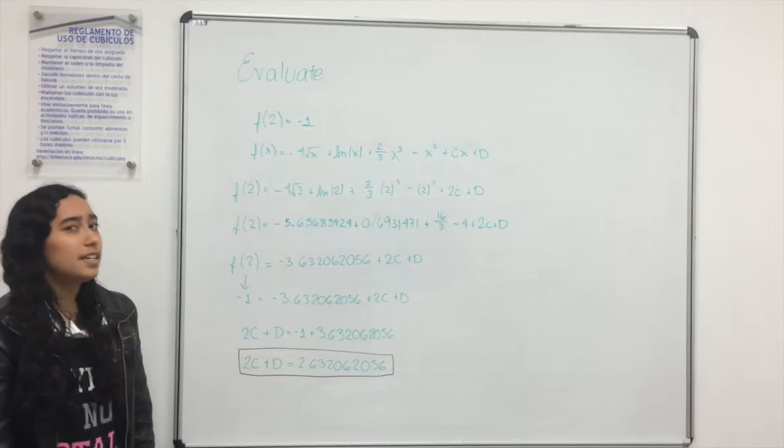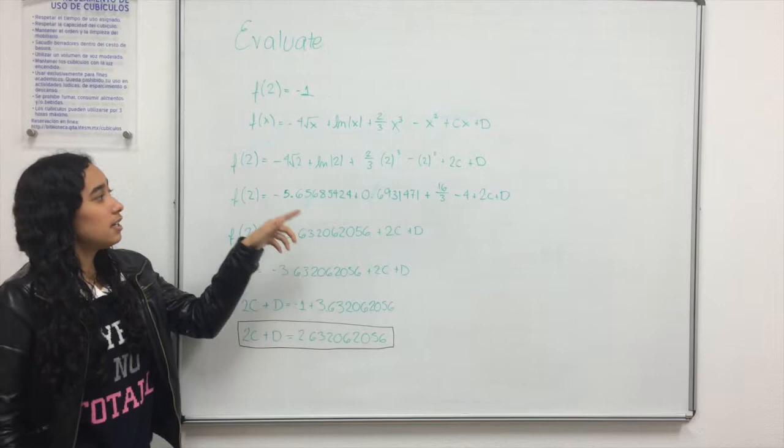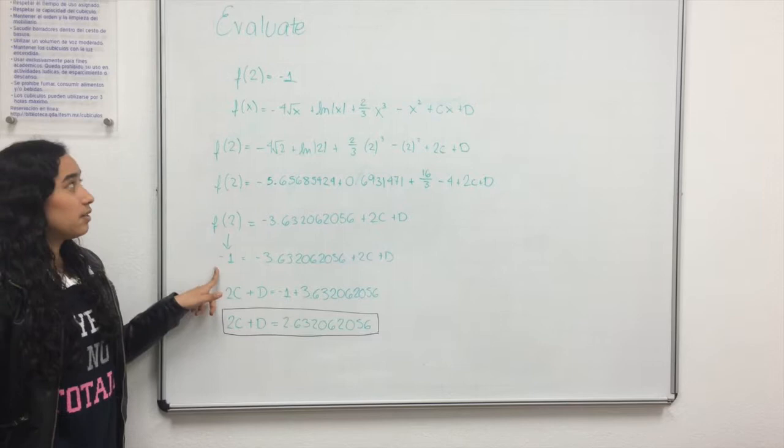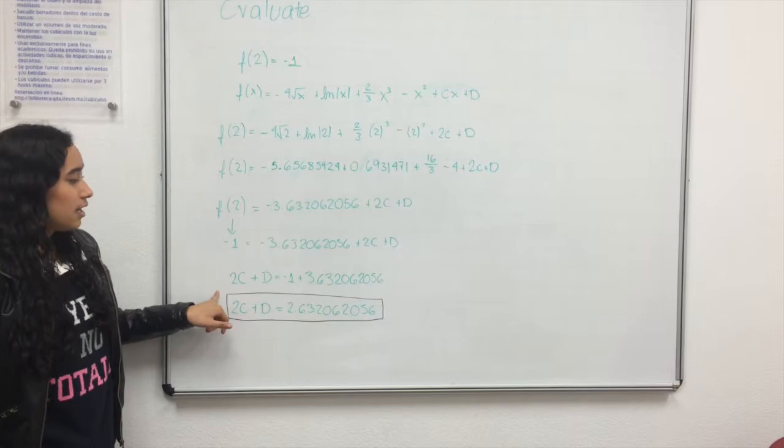So the problem says that f of 2 equals minus 1, and we now know the function of x. So we need to substitute 2 in all the x, evaluating the function. And so we make the operations needed to get a number, so that we can isolate 2c plus d. And now we know that f of 2 equals minus 1, like the problem says. And we have this value. So we need to isolate 2c plus d, and we pass this to the other side.